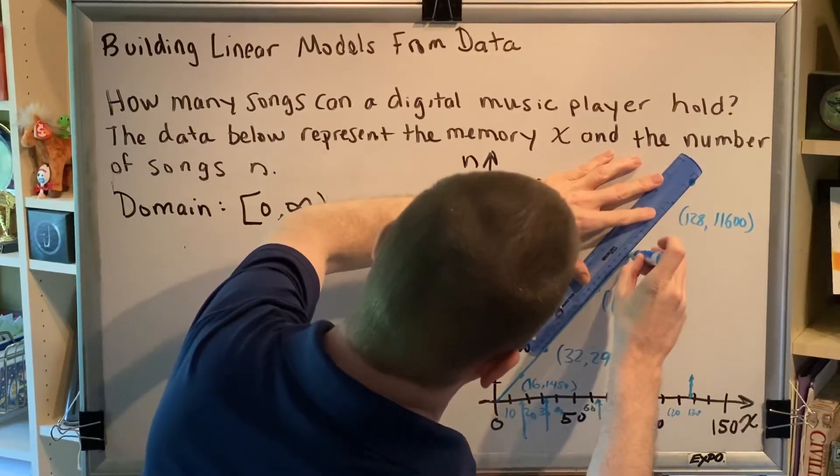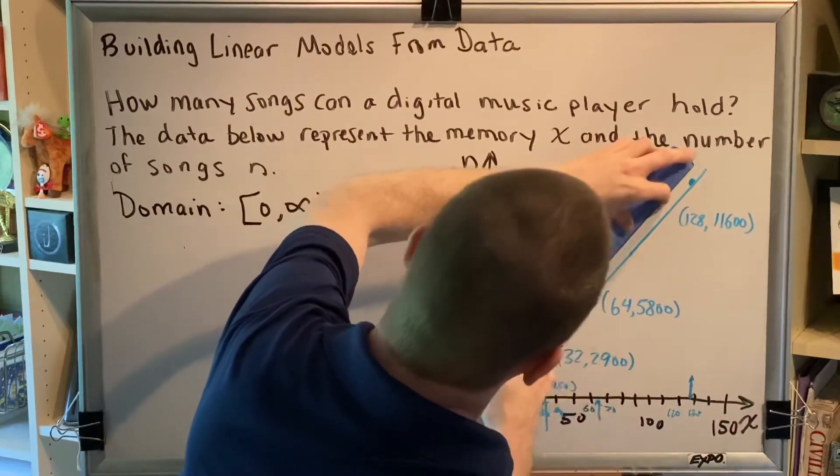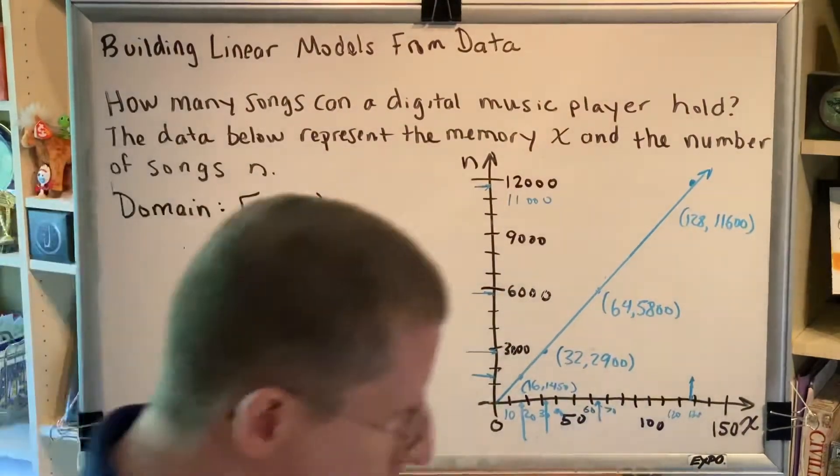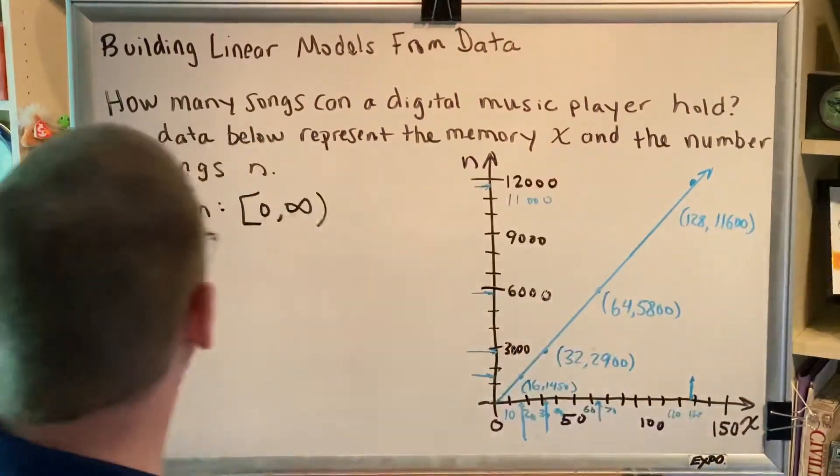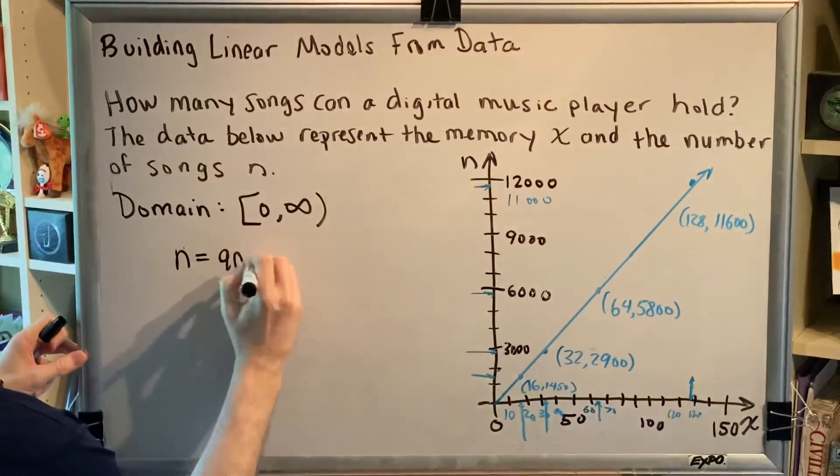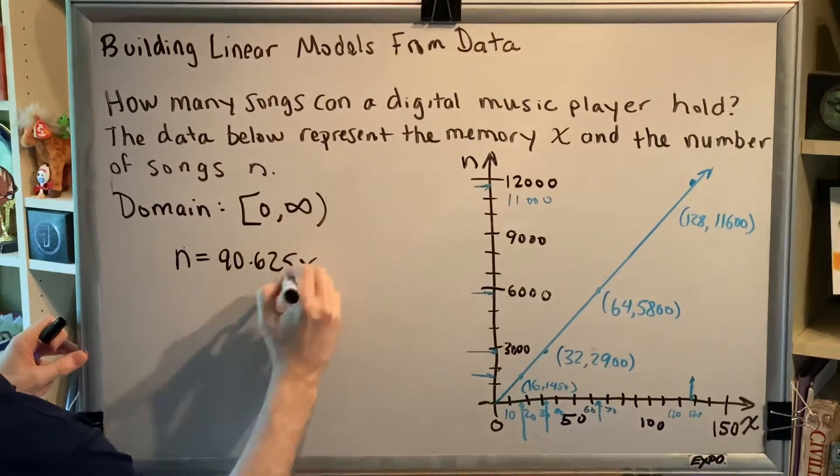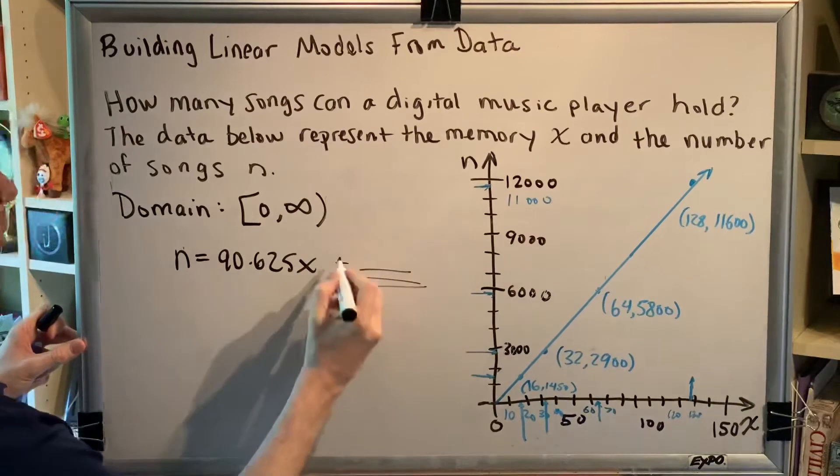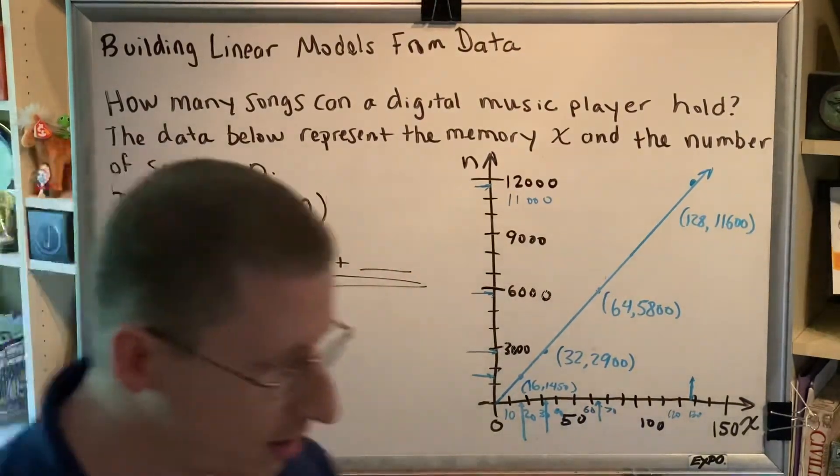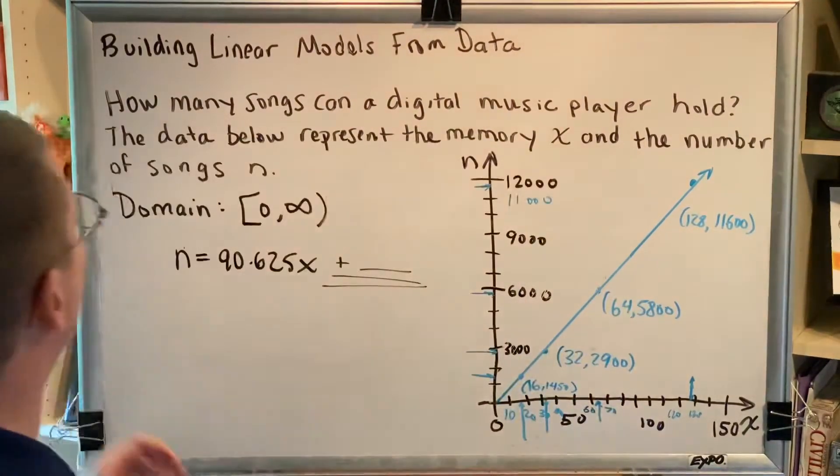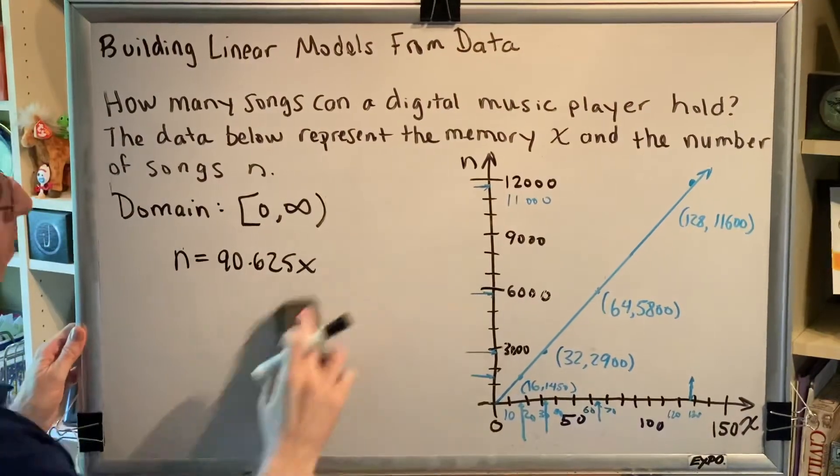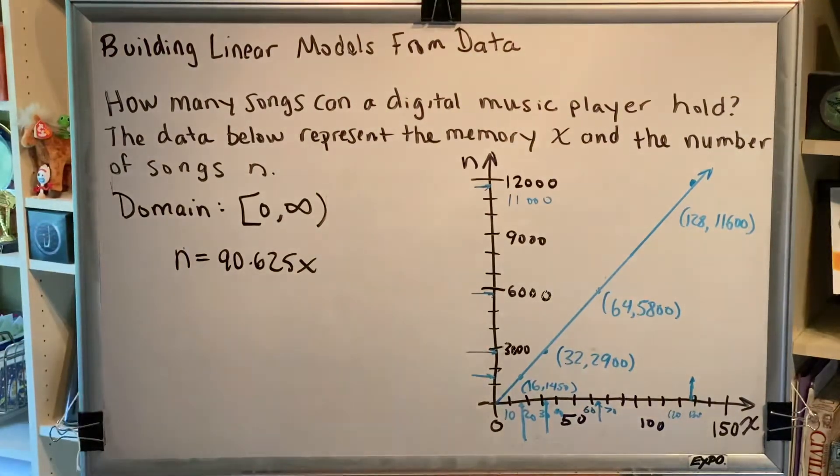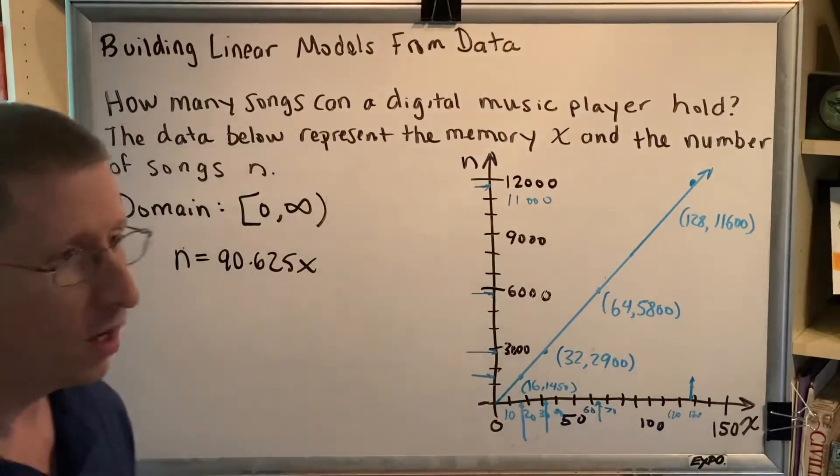You might notice that I'm drawing the line not only through those points, but also through the origin. There is a reason why I am doing that, and I will share that reason with you just as soon as I finish drawing the line. Think about the equation for the line that we wrote just a moment ago. We wrote that n was equal to 90.625x, and there was no number after this. There was no plus something or subtract something. What that means is that the y-intercept is zero, and therefore our line must go through the origin. And you can see that by drawing a straight line through the dots that we plotted, it does indeed go through the origin.